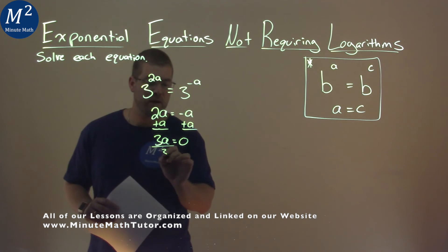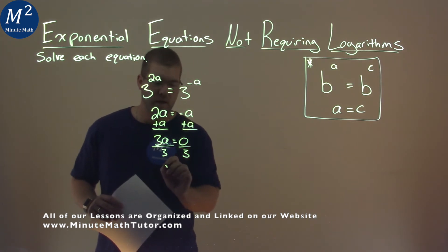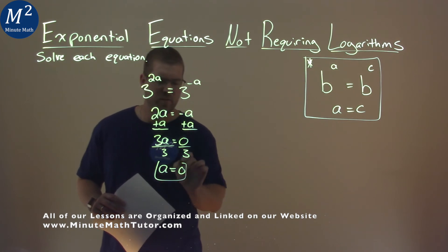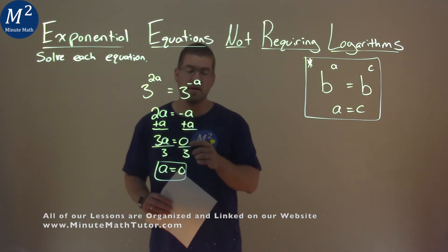From there, I divide both sides by 3, and a is equal to 0 divided by 3, which is 0. And so, my final answer here is a equals 0.